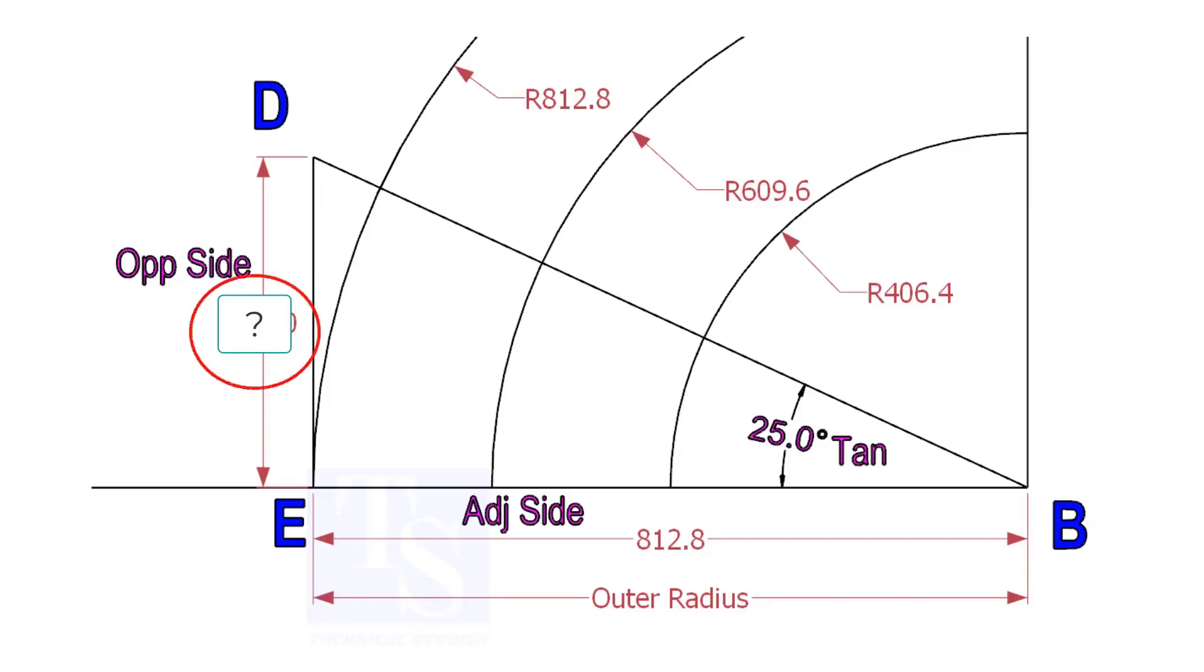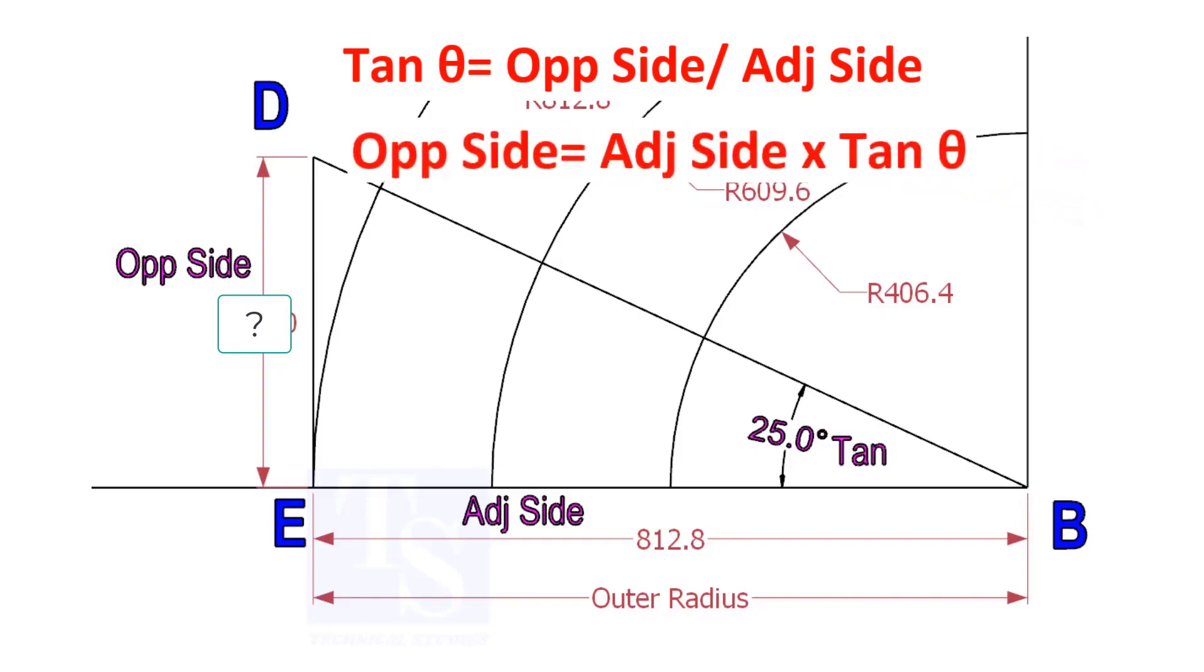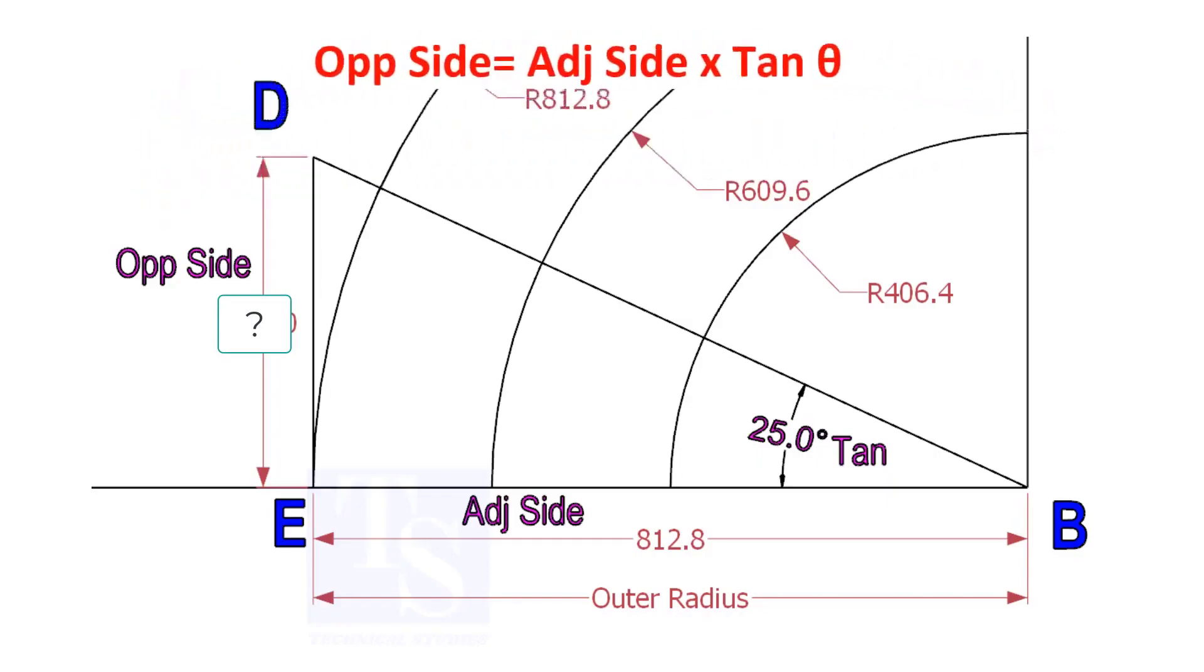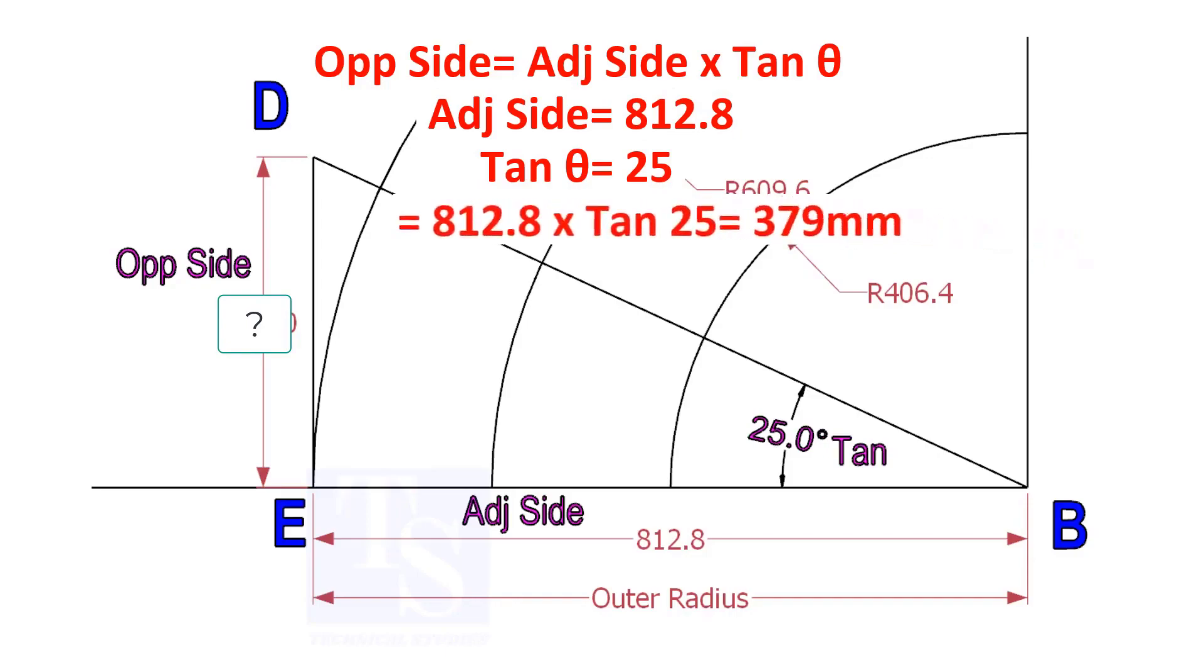To calculate ED, we need to apply the formula: tan theta equals opposite side divided by adjacent side. Opposite side equals adjacent side multiplied by tan theta. 812.8 into tan 25 equals 379 millimeters.